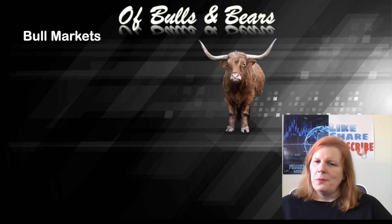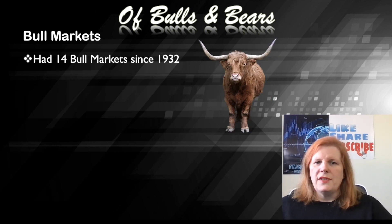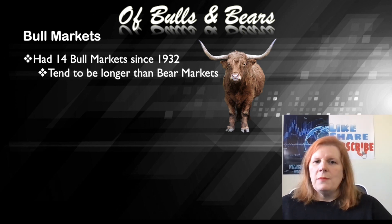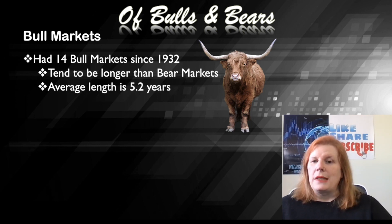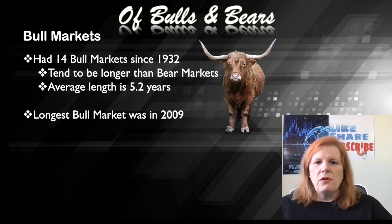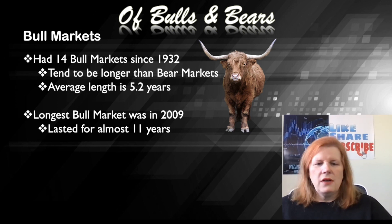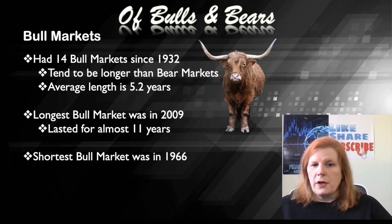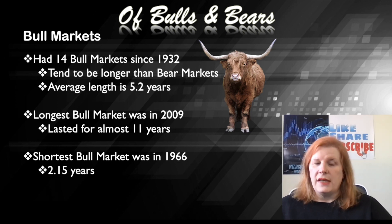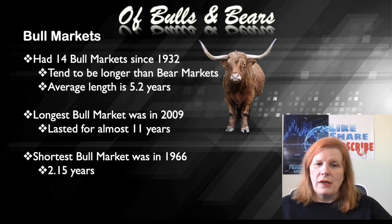Let's look at bull markets. We've had 14 bull markets since 1932, counting the one we're currently in. They do tend to be longer than bear markets. The average length of a bull market is 5.2 years. The longest bull market was in 2009 and lasted for almost 11 years — just a couple of fractions short of 11 years. The shortest bull market was way back in 1966, and it was 2.15 years. These numbers are going to come into play here in a moment because they're very interesting.